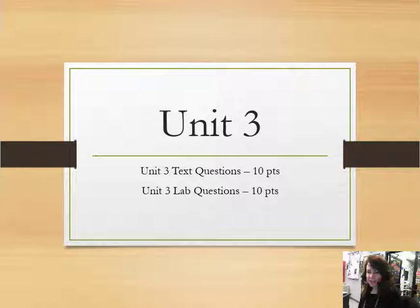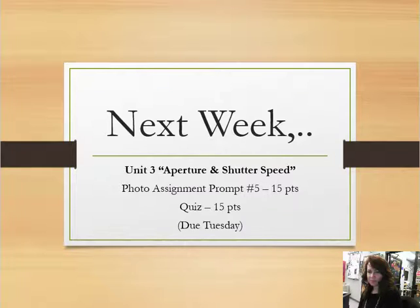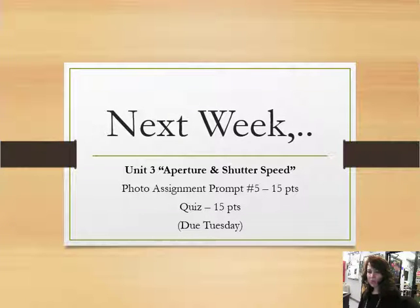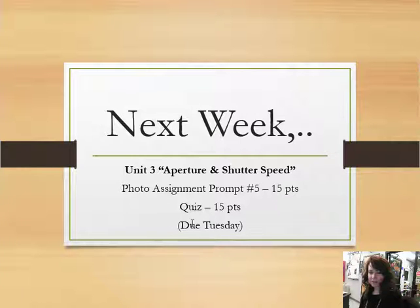In Unit 3 we have the text questions for 10 points and the lab questions for 10 points. This week we're working on the photo assignment prompt number 5, worth 15 points, and you also have the quiz which is worth 15 points. Those are due on Sunday — the slide says Tuesday but that would be Sunday.